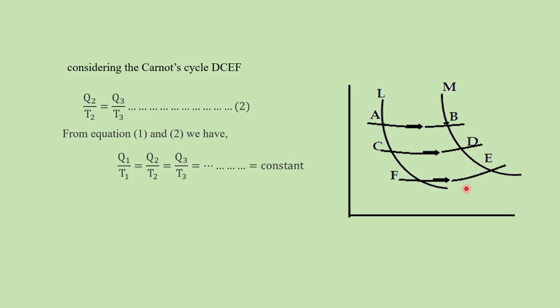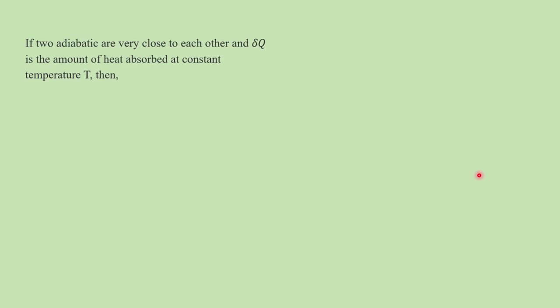In general, if we take Q as the amount of heat absorbed or rejected at temperature T in going from one adiabatic to another, we can write Q by T equals constant. Now, suppose the two adiabatics are very close to each other. If L and M are very close, we take a small amount dQ as a small amount of heat absorbed at constant temperature T, then we can write dQ by T equals constant.